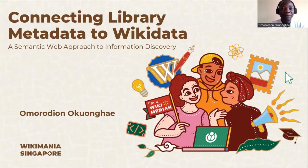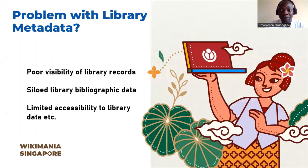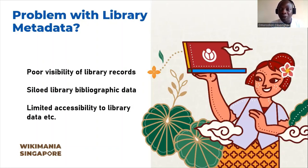We're talking about connecting library metadata to Wikidata. But why do we need to start thinking about this? This topic was born out of the current problems associated with library metadata in our current dispensation. We know that technology has helped improve library metadata, and we now have different cataloging systems and different OPAC systems — online public access catalogs — that allow for the sharing of library bibliographic records, otherwise known as library metadata. The challenge with existing technologies is that these technologies are oftentimes domiciled in each institution, making each institution have their own records, with no interconnectedness among different records and knowledge.